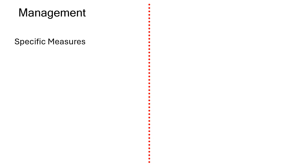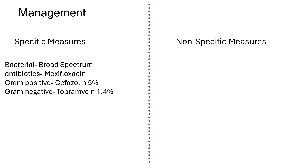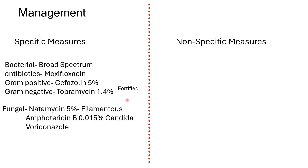Treatment includes specific and non-specific measures. For bacterial ulcers: a broad-spectrum antibiotic like moxifloxacin. For large ulcers greater than six millimeters or extending to the limbus, use fortified antibiotics — cefazolin 5% for gram-positive and tobramycin 1.4% for gram-negative organisms. These are compounded at higher concentrations to ensure adequate drug delivery to the organisms.